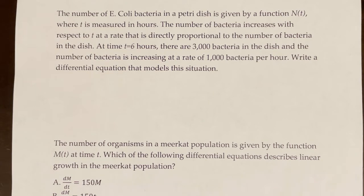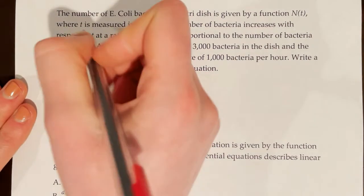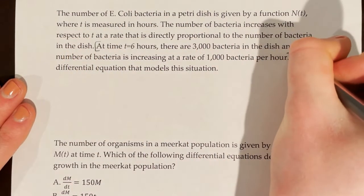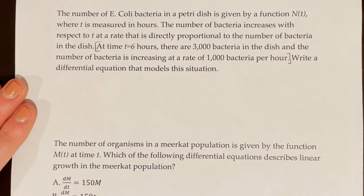The number of E. coli bacteria in a petri dish is given by the function n of t, where t is measured in hours. The number of bacteria increases with respect to t at a rate that is directly proportional to the number of bacteria in the dish. At time t equals 6 hours, there are 3,000 bacteria in the dish, and the number of bacteria is increasing at a rate of 1,000 bacteria per hour. Write a differential equation that models this situation. Note that they did not say to use k as the constant of proportionality — that's because we will figure out the actual value of k. First, we need to figure out what our differential equation is.